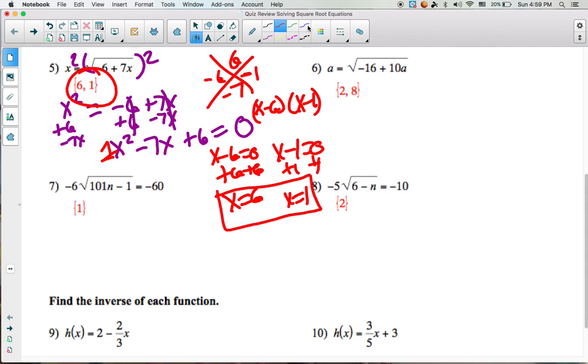For question number 6, again, you have a radical. It's by itself, so go ahead and square it. If you square the right side, you must square the left side. That's the biggest mistake that's made. That gives us a squared equals, and when you square a square root, the radical goes away, negative 16 plus 10a.